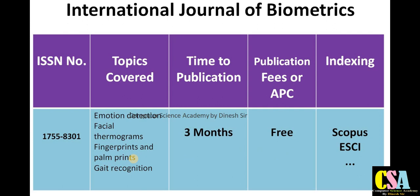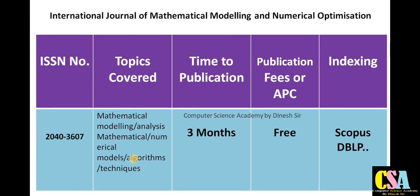Next is the International Journal of Biometrics, especially dedicated to researchers in the field of biometrics, including emotion detection, facial recognition, thermal and fingerprint recognition, retina recognition, and gait recognition. Your research paper will get published within a maximum of three months. There are no publication charges — it is free. This is an SCI and Scopus-indexed journal. Notification of acceptance, rejection, or minor changes comes within 20 days to one month.